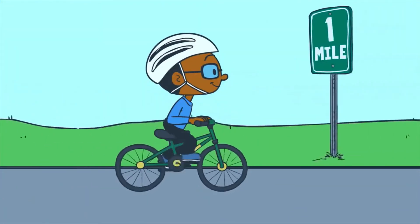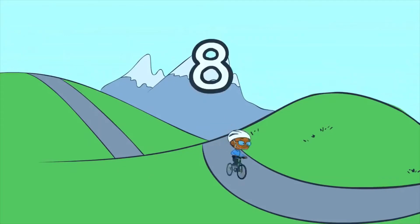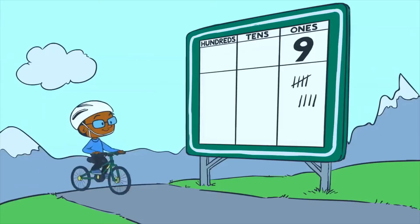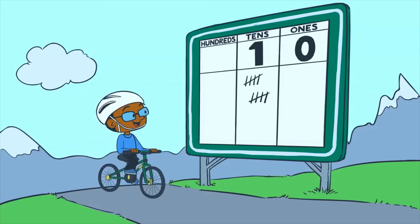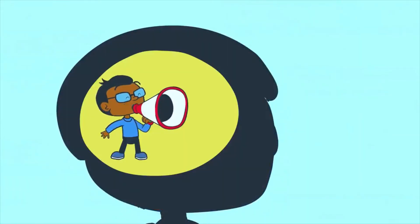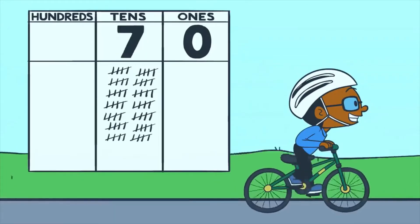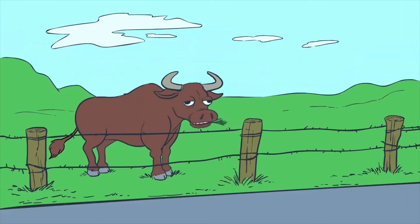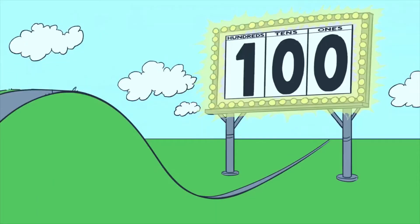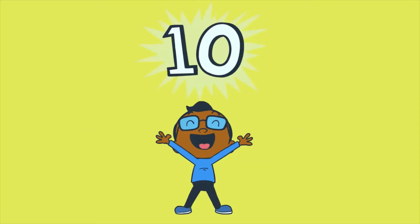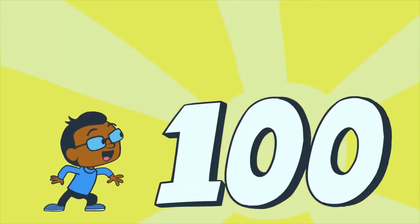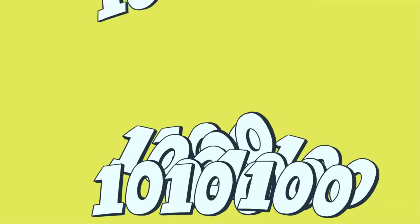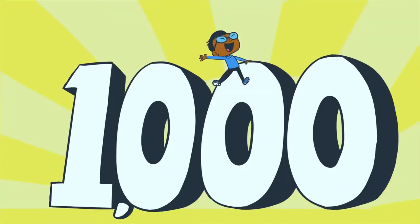I rode my bike one whole mile, then 2, 3, 4, 5, 6, 7, 8, 9, and in a little while another mile made one group of 10. A little voice inside my head said: 10 ones make 10, 10 groups of 10 are 100, 10 hundreds make 1,000 — the pattern never ends.